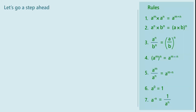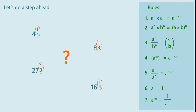Let us go a step ahead. Consider 4 raised to half, 8 raised to 1 upon 3, 27 raised to 1 upon 3, 16 raised to 1 upon 4. Can you tell which numbers do they represent? There is a problem: the index is not an integer but is a rational number, in particular a rational number with numerator 1.